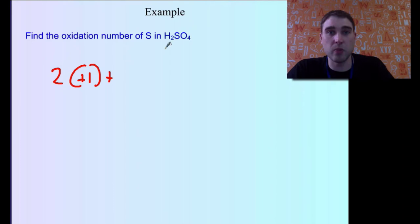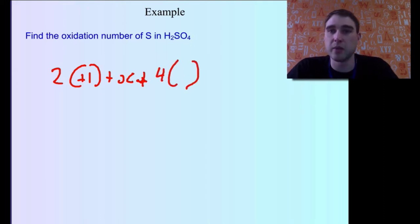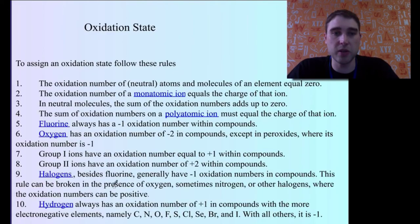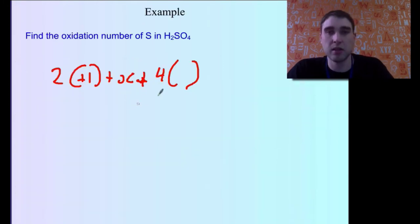So 2 times plus 1. Plus we've got 1 sulfur is equal to X. Plus we've got 4 oxygen. So 4 times the oxidation number of oxygen. If we look at our rules, the oxidation number of oxygen is always minus 2. Unless it's in a peroxide and it's not in this case. So 4 times minus 2.